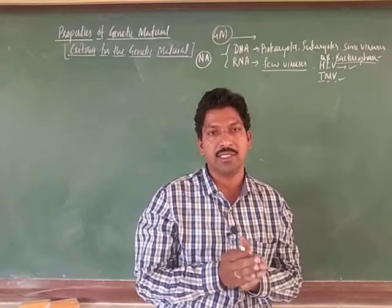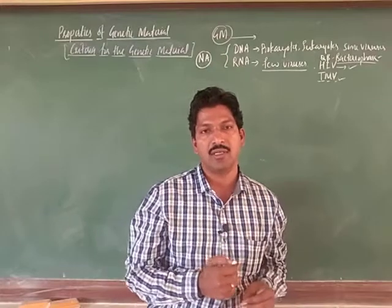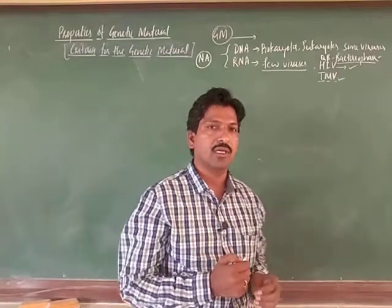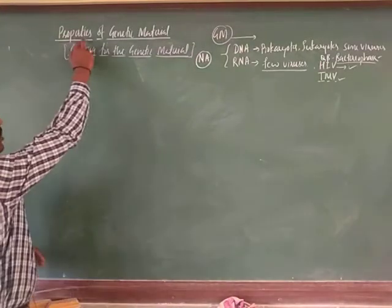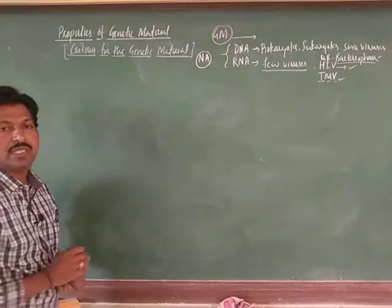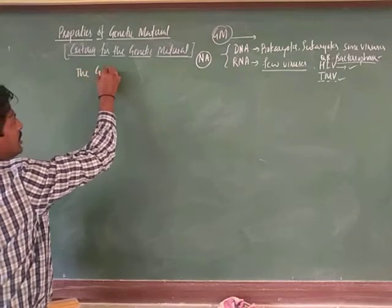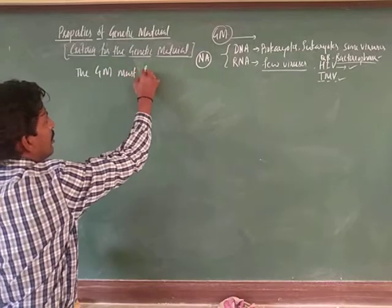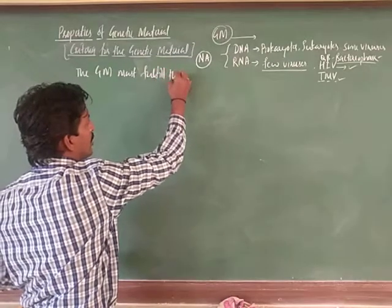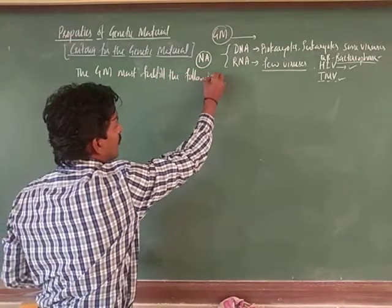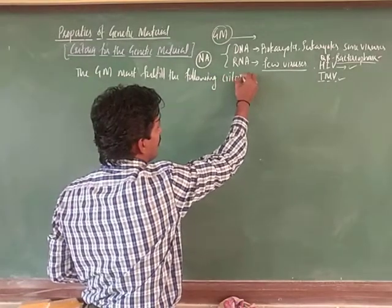These biomolecules — nucleic acids, especially DNA and RNA — must express certain criteria. They must show some criteria which are necessary for calling them the genetic material. That is what the basic properties of the genetic material are. The genetic material must fulfil the following criteria.